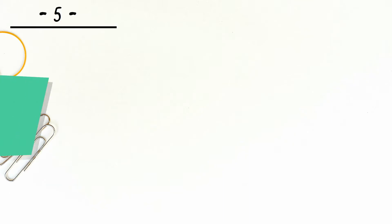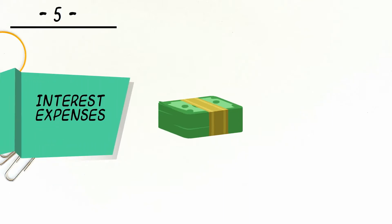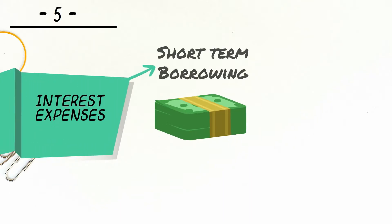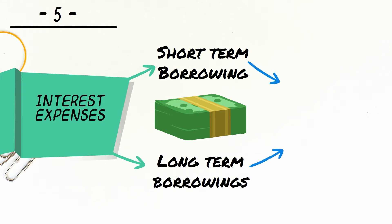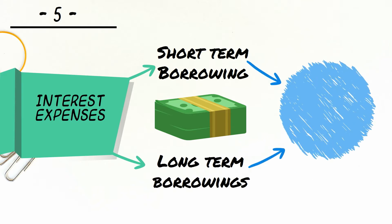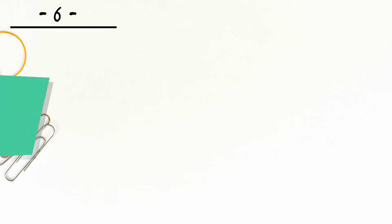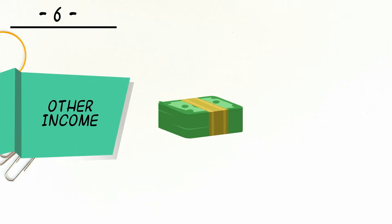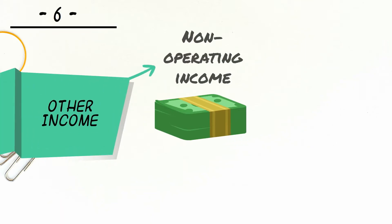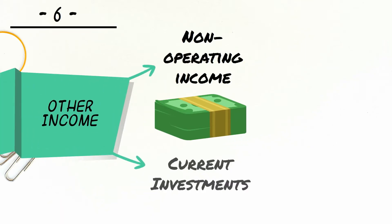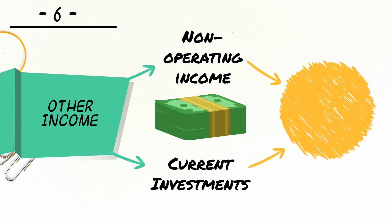Interest has to be paid on short-term and long-term borrowings, both of which are liabilities on the balance sheet. A company may earn non-operating income in addition to its sales income. This typically takes the form of interest and dividends earned from current investments.